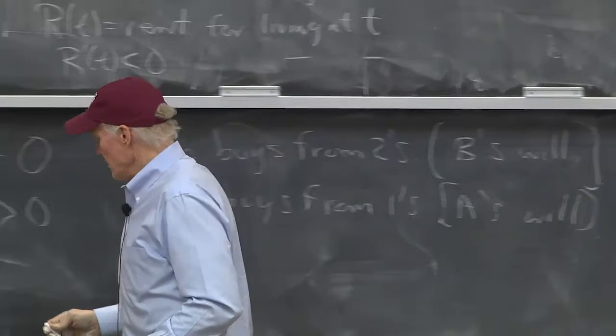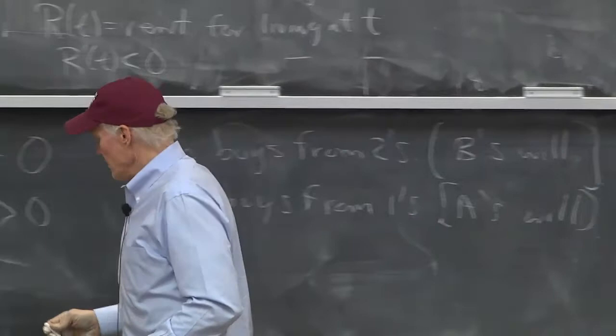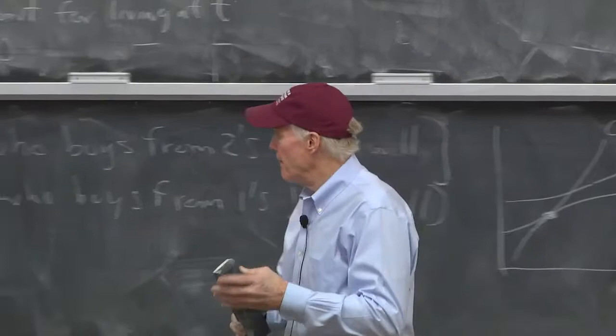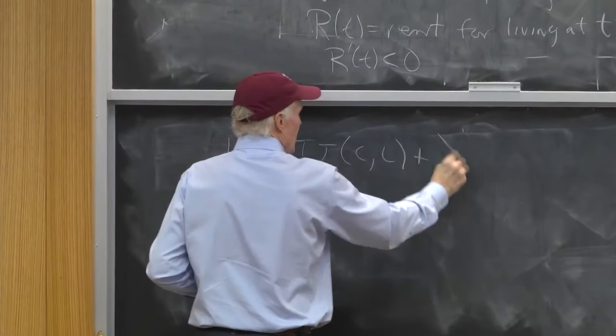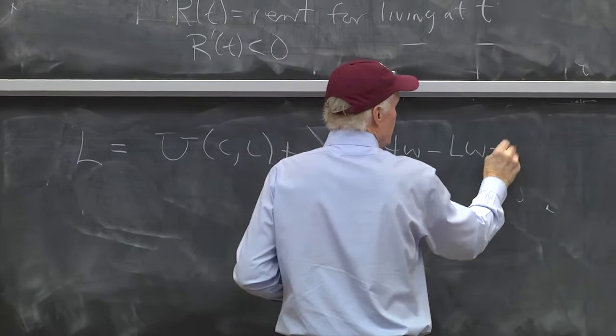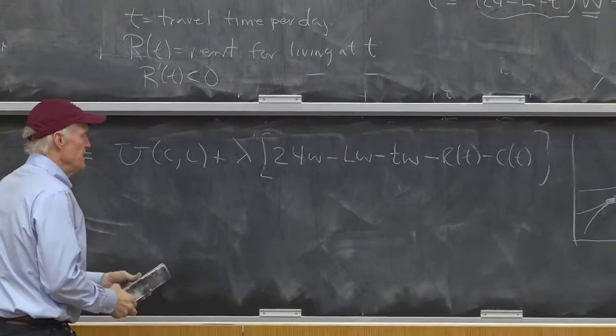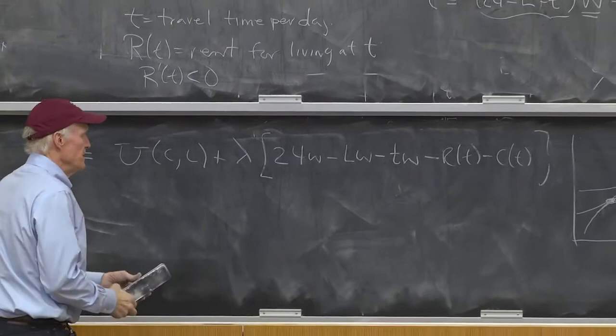The Lagrangian for this problem: L equals U of C, L plus lambda times 24W minus LW minus TW minus R of T minus C. That would be my Lagrangian because that has to be equal to zero. Just move the C over the other side.